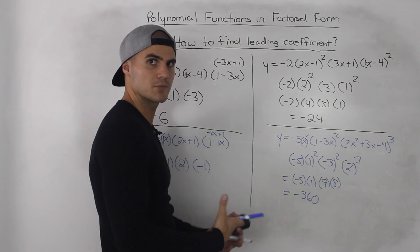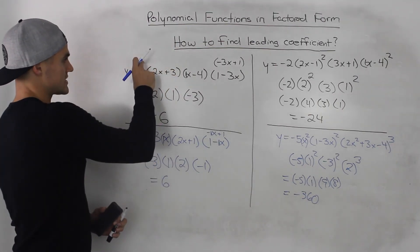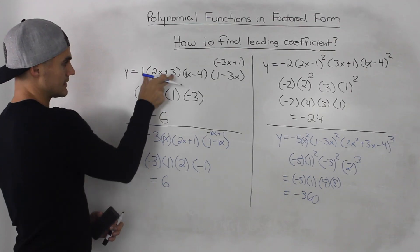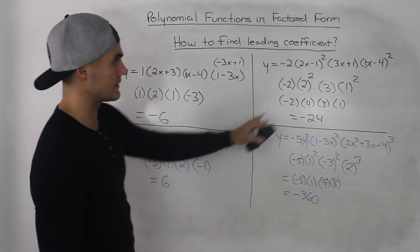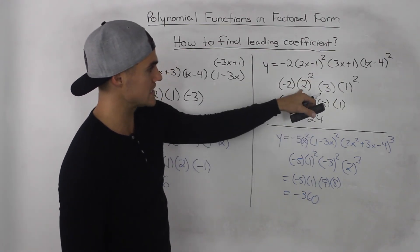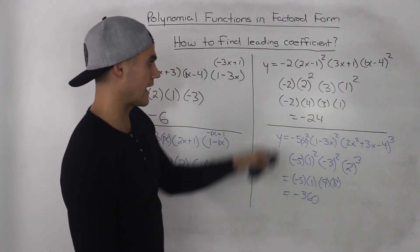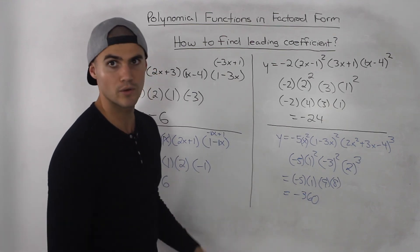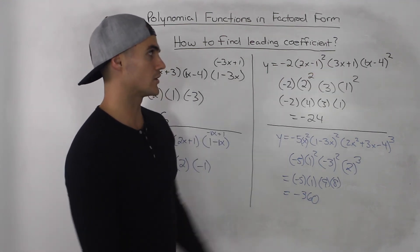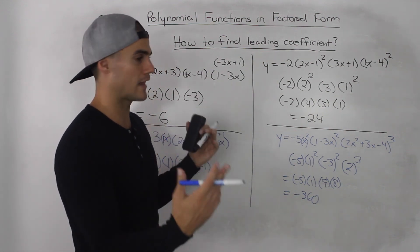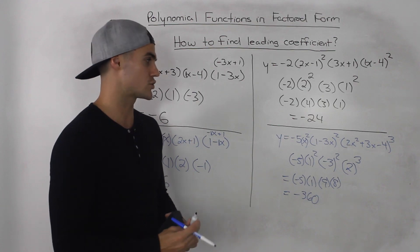So you're catching the pattern here. Basically it's really simple — all you're doing is taking the number in front and then taking the leading coefficient of each bracket. And if there is a bracket that is to a power, you take that leading coefficient and raise it to that power. It's just a simple way to find the leading coefficient without fully expanding, going through all the foiling, and doing all that work.